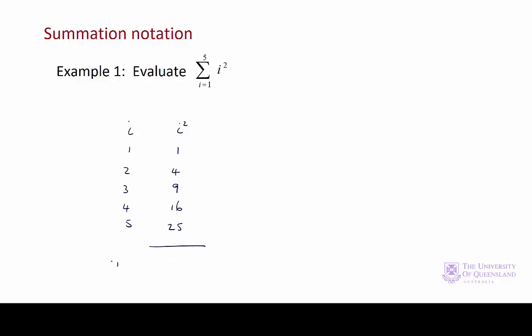So we have our total there is equal to 55. Writing out our answer, the sum from i equals 1 to 5 of i squared is equal to 55.